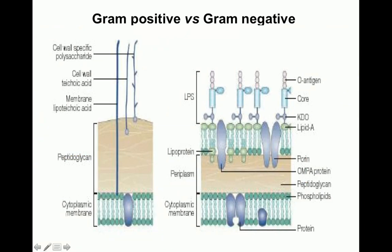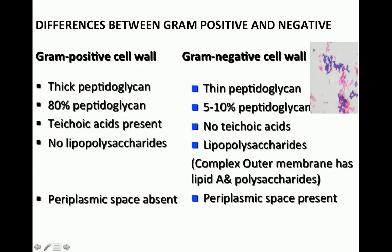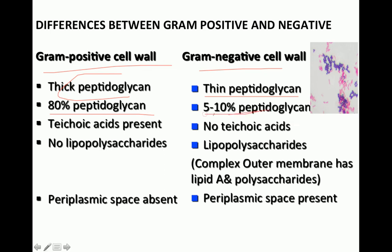Tabulated differences: gram-positive bacteria have a thick peptidoglycan layer constituting 80 percent of the cell wall, contain teichoic acid and may have M proteins, but have no lipopolysaccharide and no periplasmic space. Gram-negative bacteria have lipopolysaccharide composed of lipid A and polysaccharides, a periplasmic space, but peptidoglycan constituting only 5 to 10 percent of the cell wall.